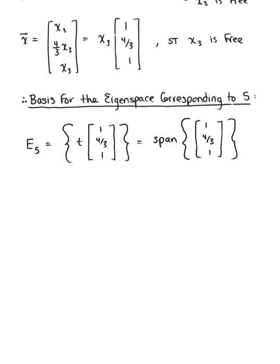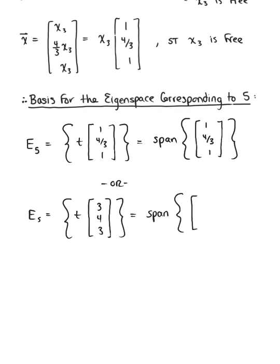This answer is perfectly fine, but if you want to remove that fraction, remember that we can multiply each component by the least common denominator, 3. So alternatively, we can write this as the set of all scalar multiples of [3, 4, 3], or the span of {[3, 4, 3]}. This is our final answer for the eigenspace corresponding to lambda sub 3 equals 5.